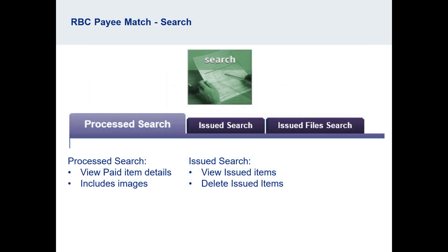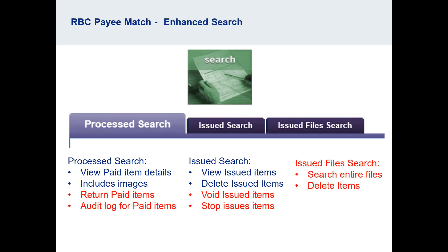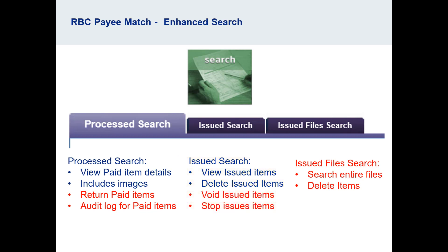For the search feature, the basic search functions are listed here in blue, and in red are the additional functions for enhanced accounts only. When searching processed items, users can return items that were previously paid. Under the issued or outstanding search, users can stop or void items. Enhanced accounts will also have an issued file search tab, which will allow users to search and delete entire issued files.